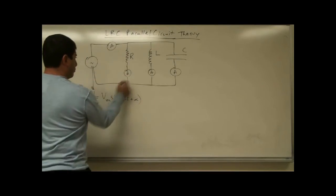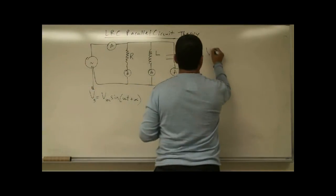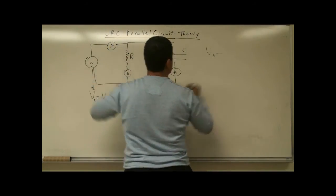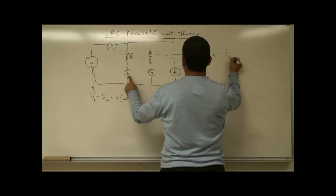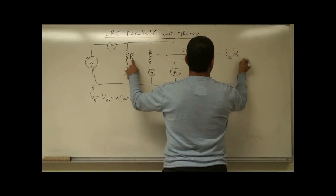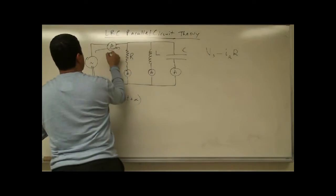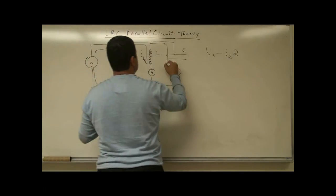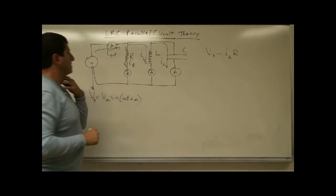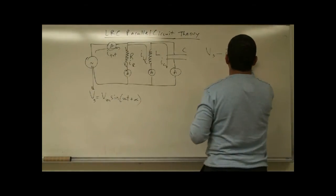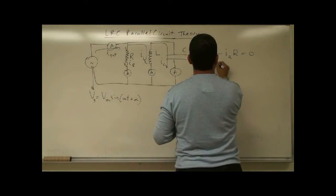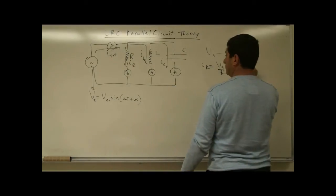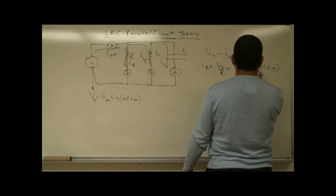If we analyze one branch, we can say V source minus IR times R equals zero. The total current I total breaks up into IR, IL, and IC. So the current in the resistor equals the voltage of the source over R, which is Vm sine(omega t + alpha) over R.